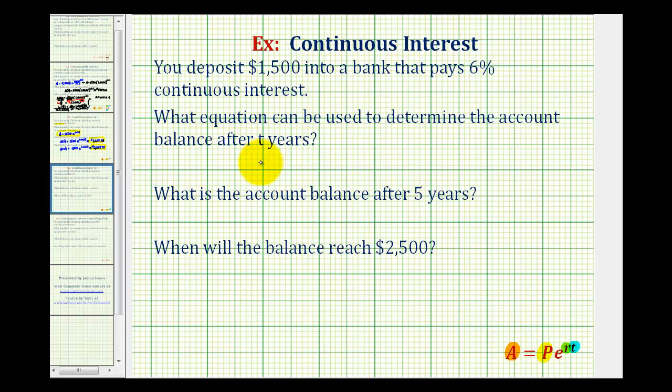So for this situation we'd have the equation A equals P, the starting amount of 1,500, times e raised to the power of r times t. Well the rate is 6%. 6% as a decimal would be 0.06 times t, the time in years. So here's our equation that will tell us the account balance after t years.